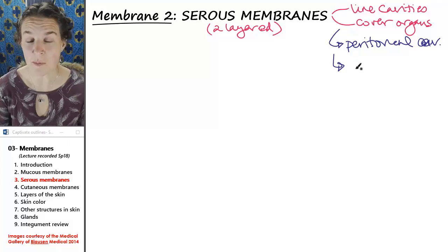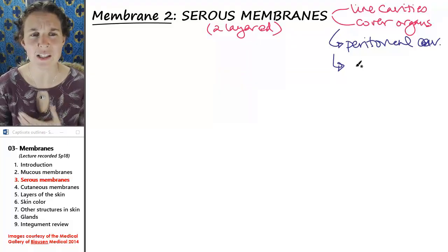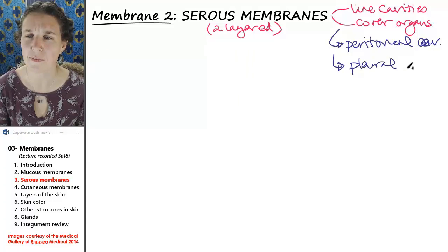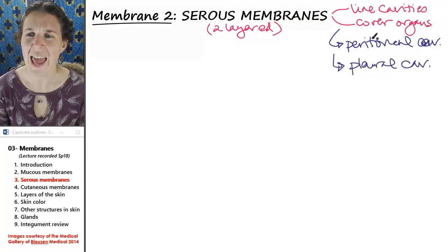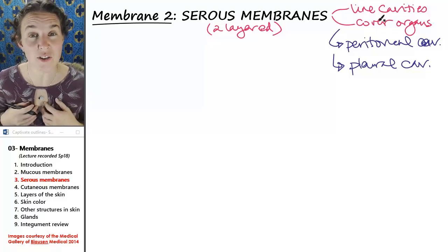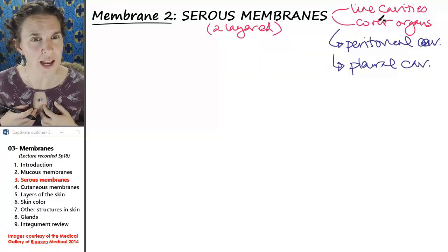Another serous membrane is found lining the two pleural cavities. They line the pleural cavity and cover the organs in the pleural cavity.